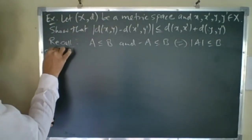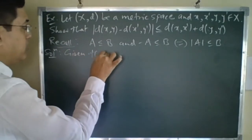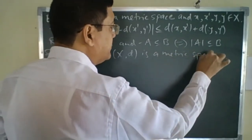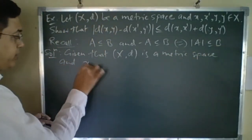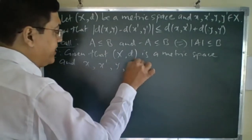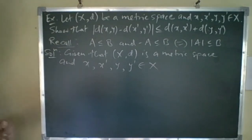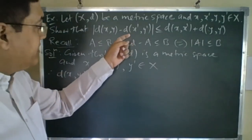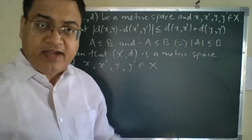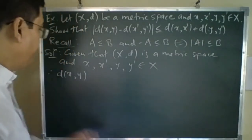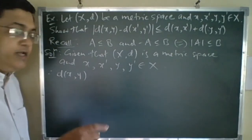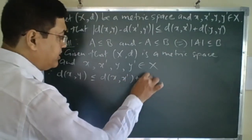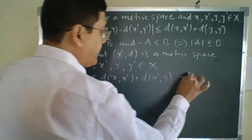Solution: given that (X,d) is a metric space and points x, x', y, y' belong to X. We consider D(x,y). We have to show that D(x,y) − D(x',y') ≤ D(x,x') + D(y,y'). By triangle inequality, D(x,y) ≤ D(x,x') + D(x',y) by triangle inequality.